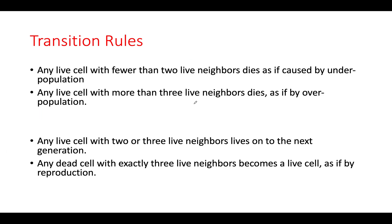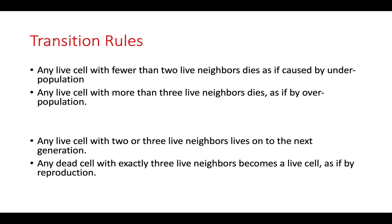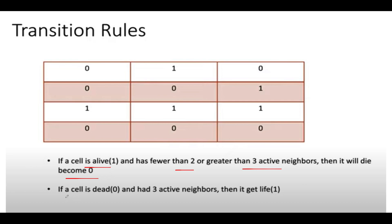I have simplified these transition rules and they can be reduced to only two. If a cell is alive (state one) and has fewer than two or greater than three active neighbors, then it's going to die and become zero. If a cell is dead (state zero) and has exactly three active neighbors, then it will get alive and its state will be updated to one. We can simply apply these transition rules onto the matrix. However, there is one issue.